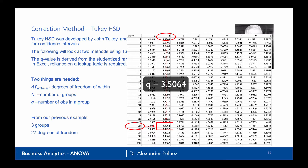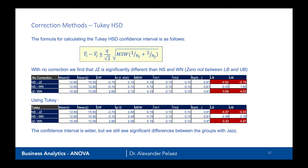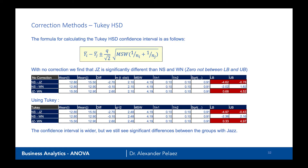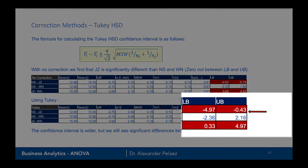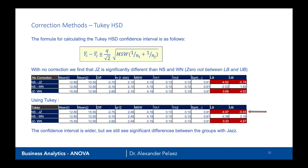Now we slightly modify the formula: m = q divided by the square root of 2. Plugging in our q value gives m = 2.48. This computes a new lower and upper bound. For the first pair (no sound vs. jazz sound), the new lower bound is −0.497 and the upper bound is −0.43. You'll notice it is a slightly wider confidence interval, and our conclusion remains the same — the first and third groups have significant differences but the second does not.